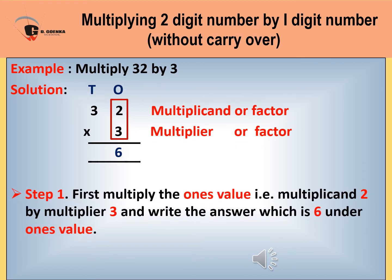So today I will explain how to multiply a two digit number by a one digit number without carry over, with the help of an example. Here we multiply 32 by 3. As you can see in the solution, we have aligned the sum — 32 is our multiplicand and 3 is our multiplier, which are also known as factors. Step 1: multiply the ones value, that is multiplier 3 by multiplicand 2, and write the answer which is 6 under the ones place.